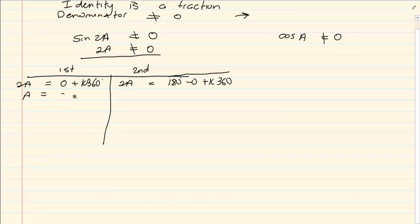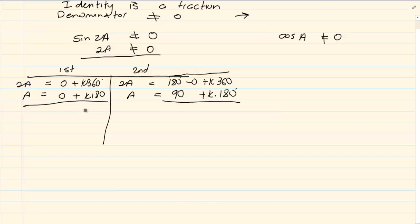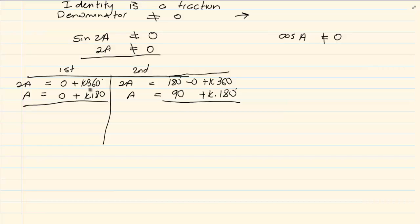Solving for a: from the first quadrant, a = 0 + k·180°. From the second quadrant, a = 90° + k·180°. These are our solutions for the restriction sin2a ≠ 0.